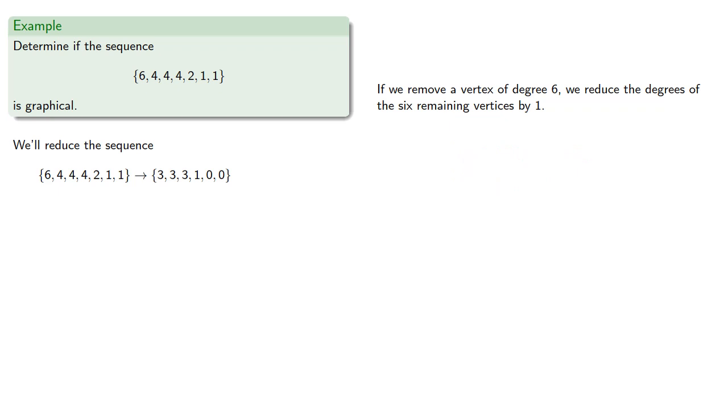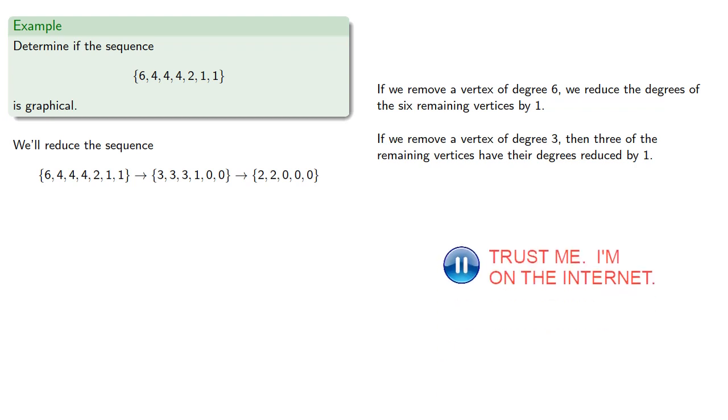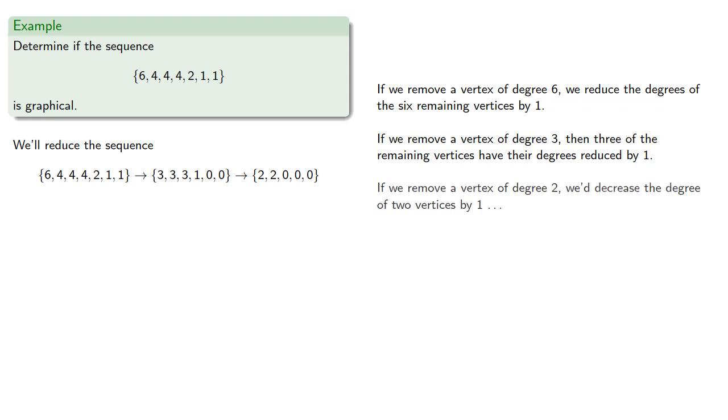If we remove a vertex of degree 3, then three of the remaining vertices have their degrees reduced by 1. If we remove a vertex of degree 2, we'd decrease the degree of two vertices by 1, but we can't do that.